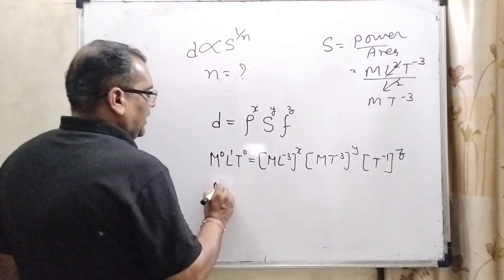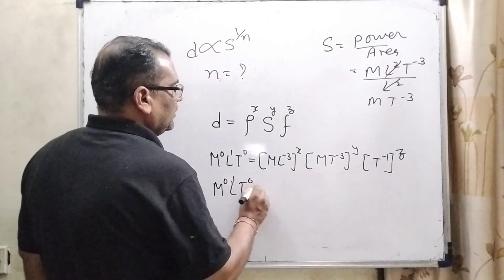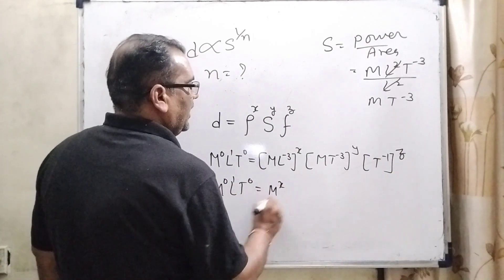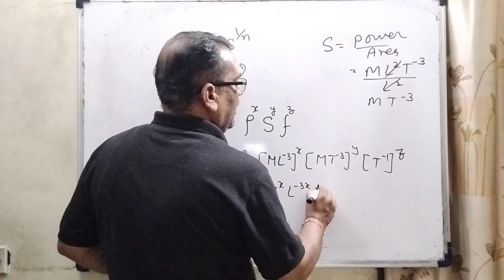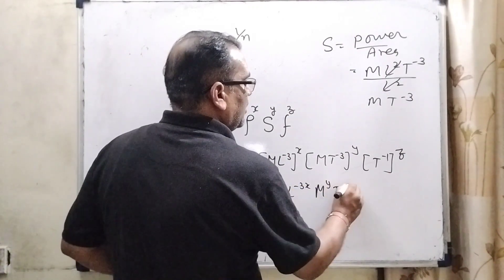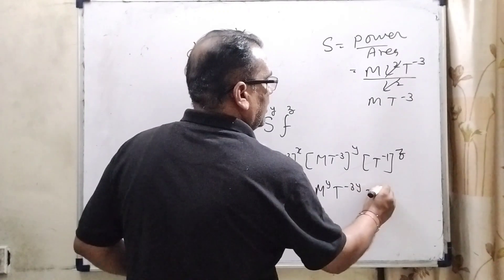Now it can be written as M^0 L^1 T^0 equals M^x L^-3x times M^y T^-3y times T^-z.